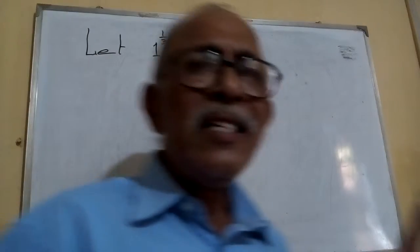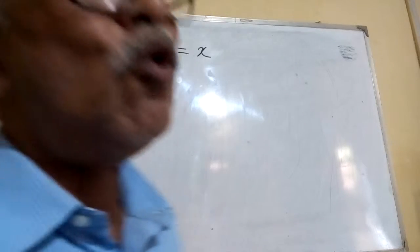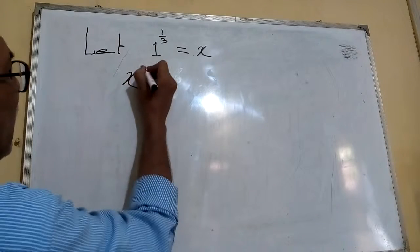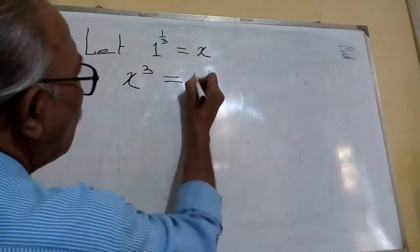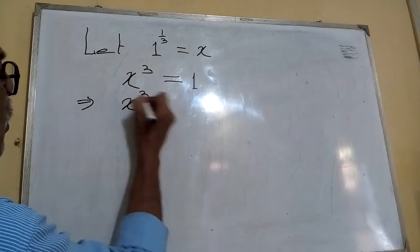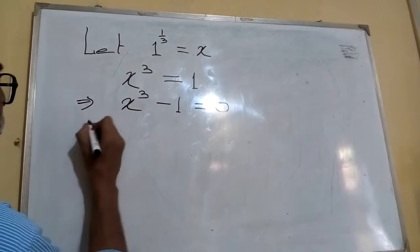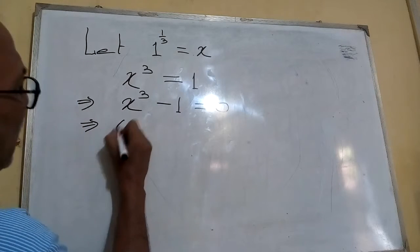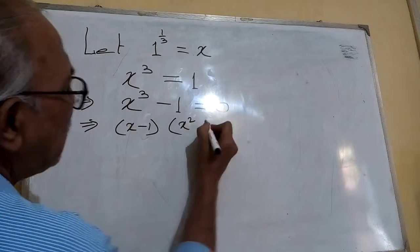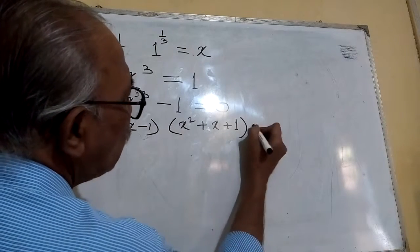So if we can find the value of x, then we can be able to know what is the cube root of one. From here, by cubing both sides, we can write x cube equals to one. Or we can say x cube minus one equals to zero. From here, we can write x minus one, into x square plus x plus one, equals to zero.